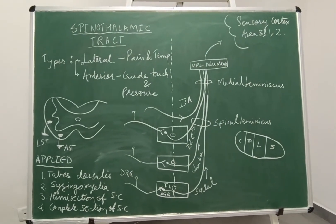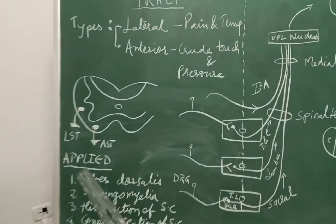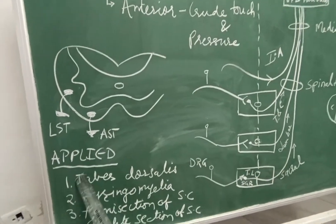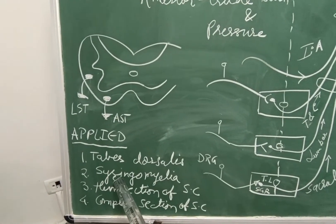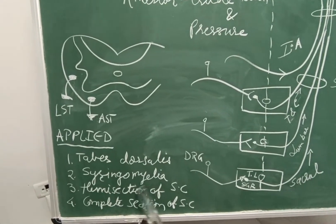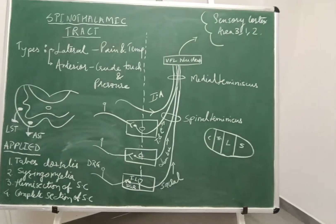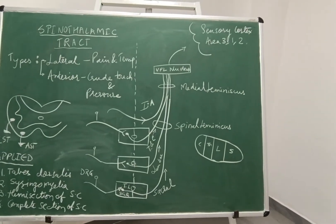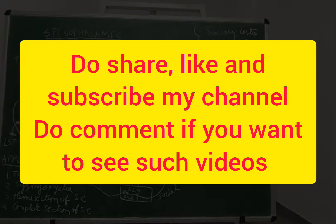So this is the diagram which is showing all the tracts. Now let's see about the applied: tabes dorsalis, it is the syphilistic infection of the spinal cord. Syringomyelia, it could be a cavity or a cyst which could be acquired or hereditary nature. Others are the hemisection of spinal cord also known as Brown-Séquard syndrome and complete section of spinal cord.